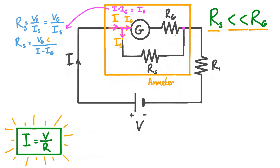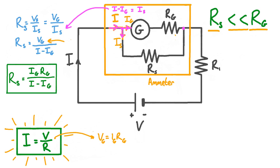Our final step in this derivation is to substitute for Vg, the voltage across the galvanometer. Rearranging Ohm's law to make V the subject gives V equals IR, which means Vg equals Ig times Rg. Substituting this in place of Vg, we're left with Rs equals IgRg divided by (I minus Ig). Where Rs is the resistance of the shunt resistor, Ig is the current in the galvanometer, Rg is the resistance of the galvanometer, and I is the current in the circuit.